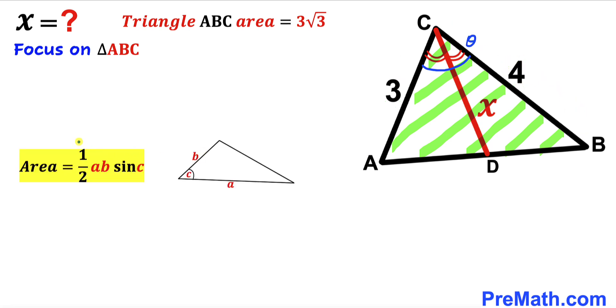Let's recall the area of a triangle formula: Area equals one half times A times B times sine of angle C, where A and B are two side lengths and C is the angle between them.